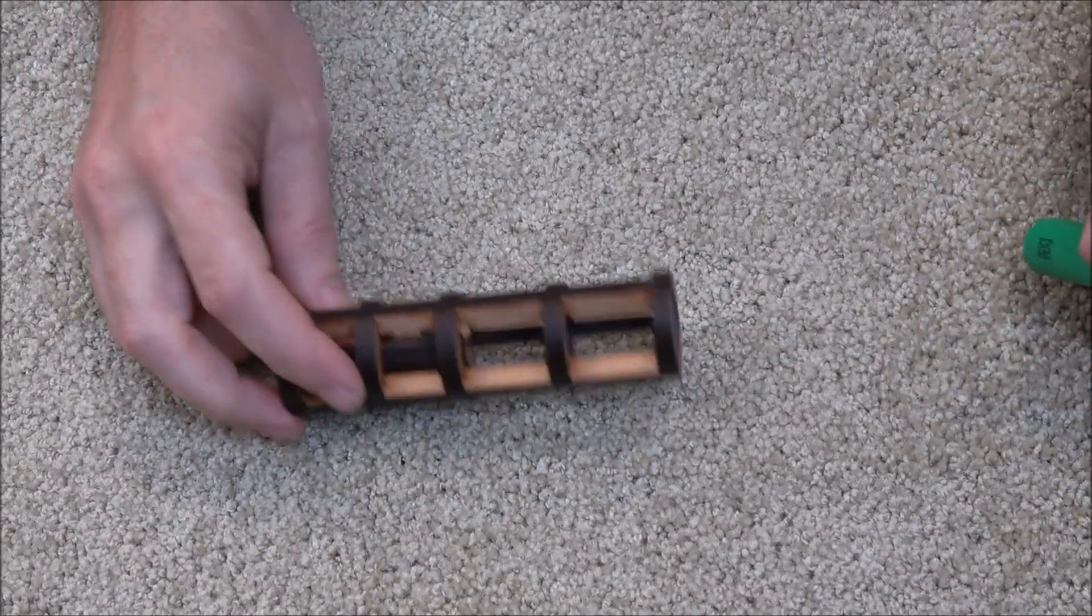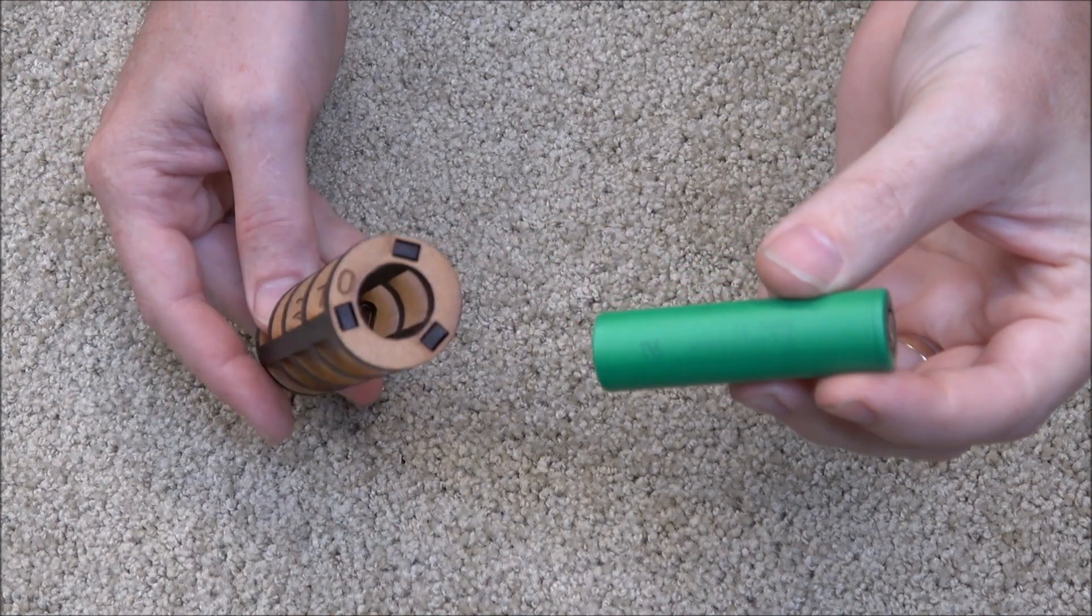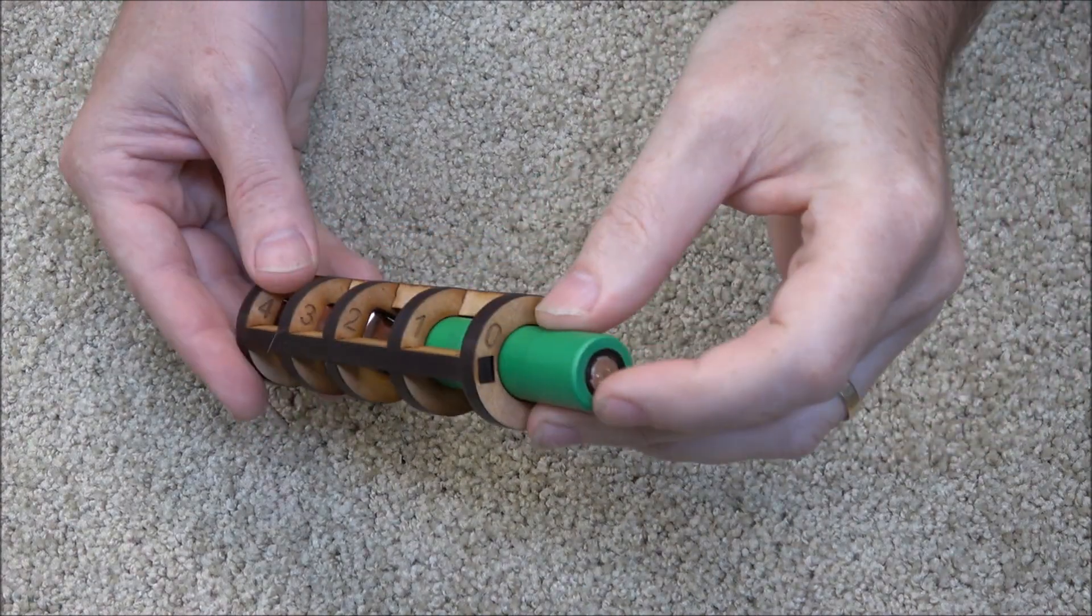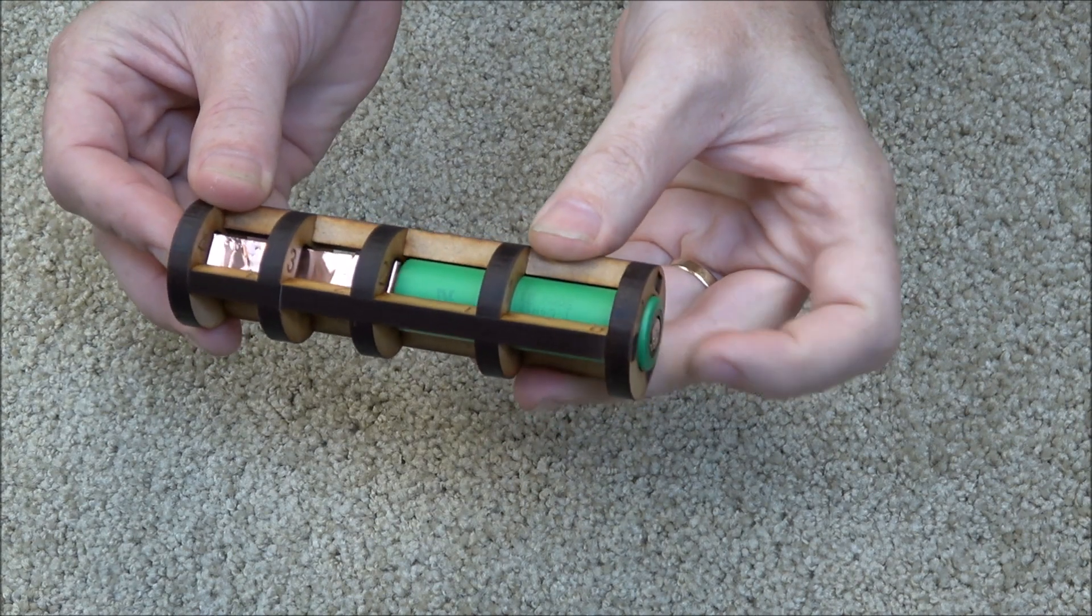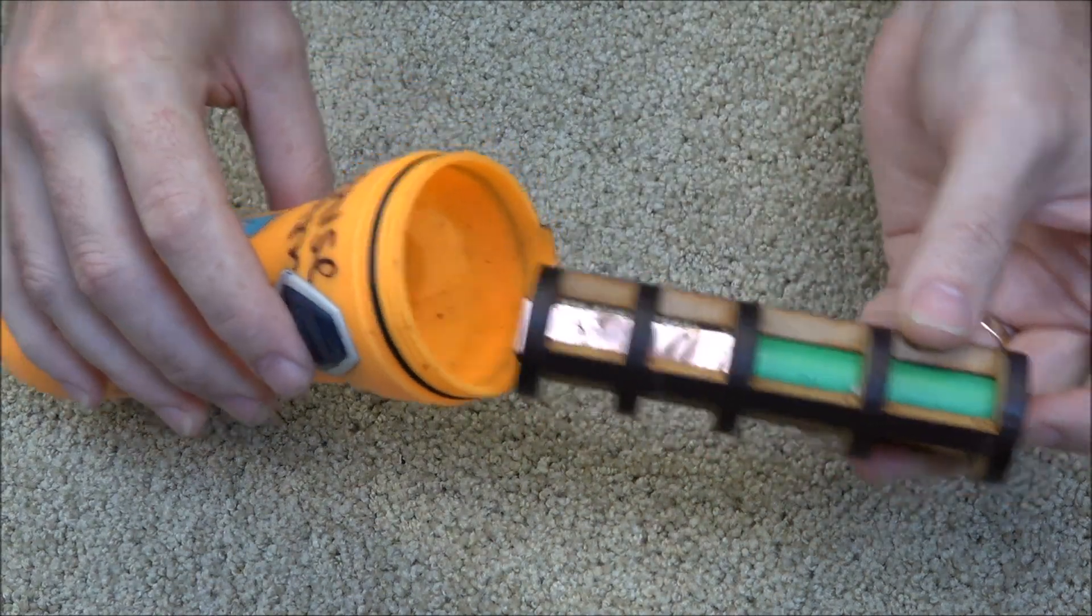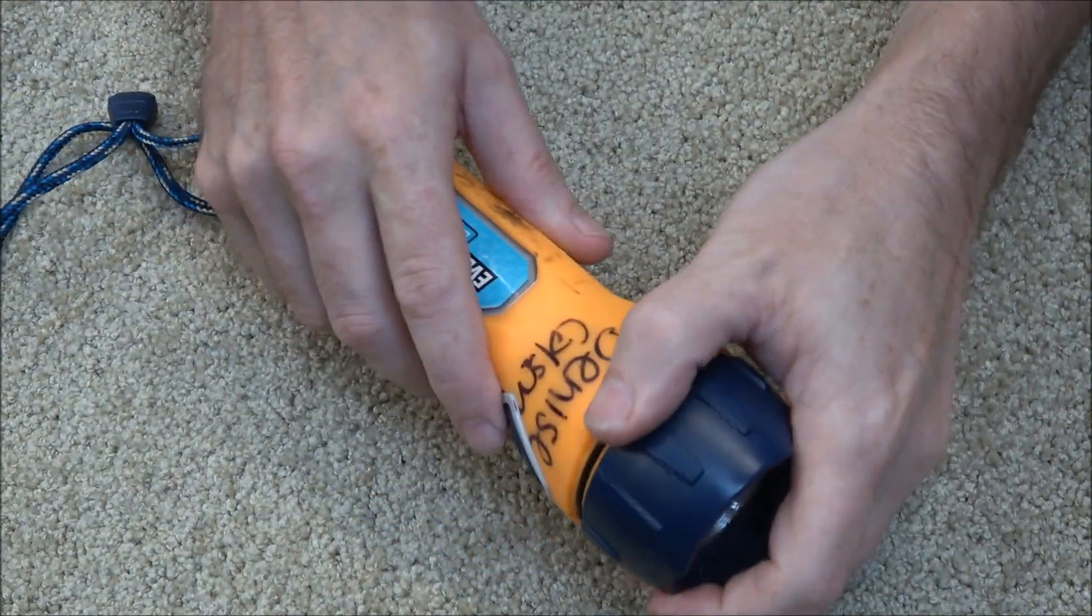Final assembly to see if this works. So here we have our 18650 and we'll put it in here. Nice fit. You can see that it all just floats in there, two and a half millimeters of float or so. Let's put this into the flashlight and screw it together.